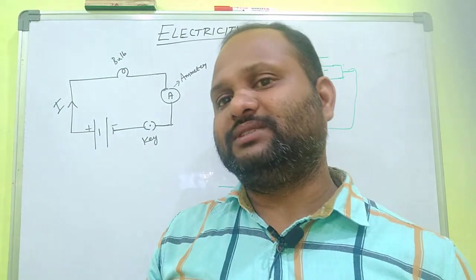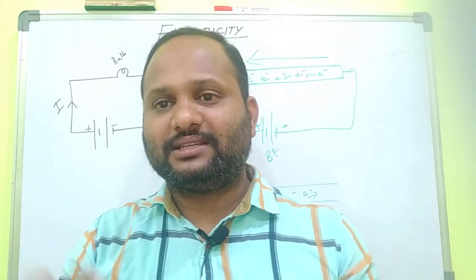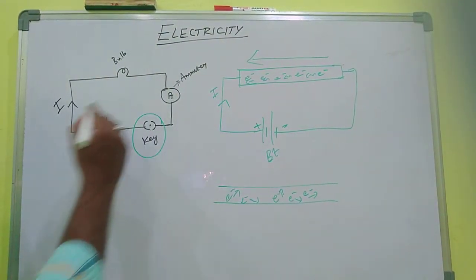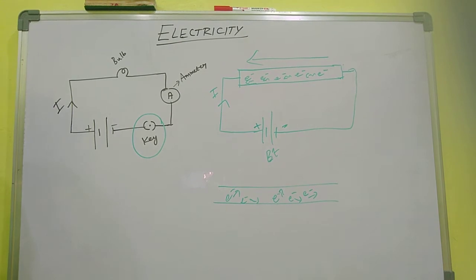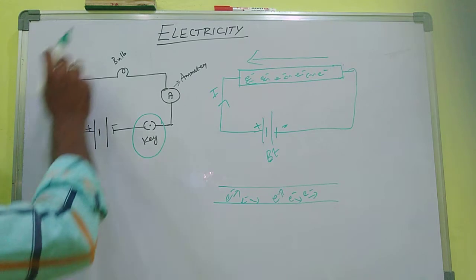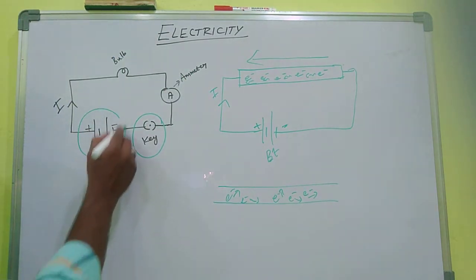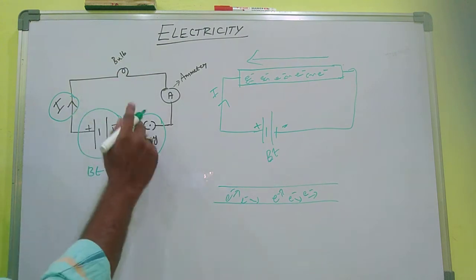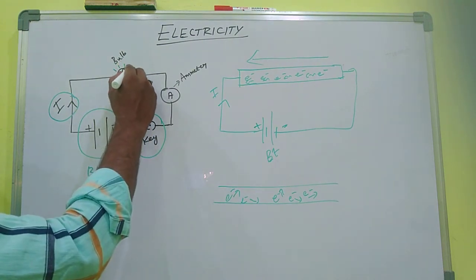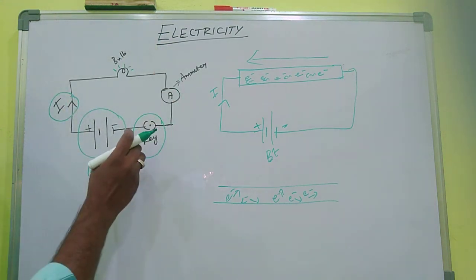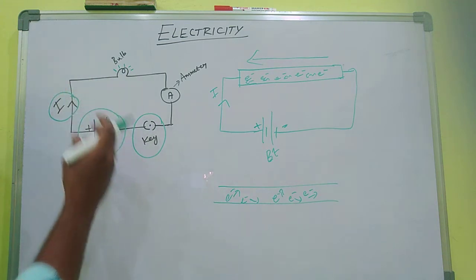The key or switch is used to make the circuit closed. This is the key — it is used to make the circuit closed. This is the battery — it sets the potential difference. This is the direction of the current. This is the bulb. When the key is closed, the bulb will glow. When the key is open, the circuit is broken and current will not flow, so the bulb will not glow.